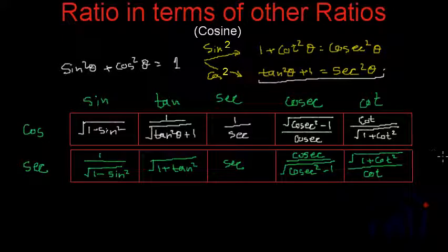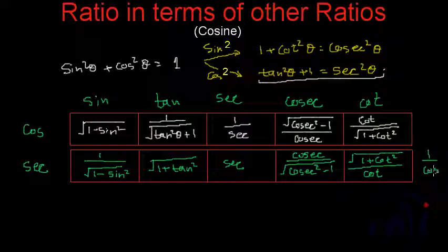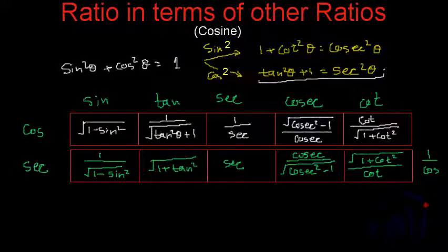We found these values because sec theta is equal to 1 by cos theta, so we simply took the reciprocal of the cos expressions. That's all for this video. In the next video we are going to represent tan and cot in terms of other ratios. Keep watching MathsMart — bye-bye till then, thank you.